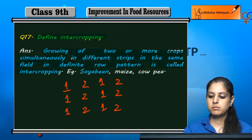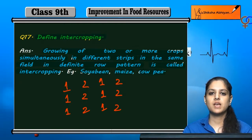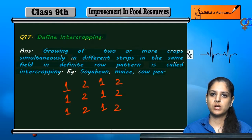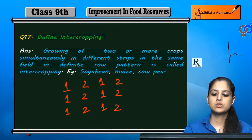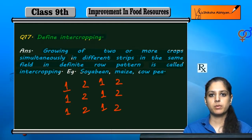Soybean, maize, cowpeas — if we grow these in a proper row pattern together, that is an example of intercropping.